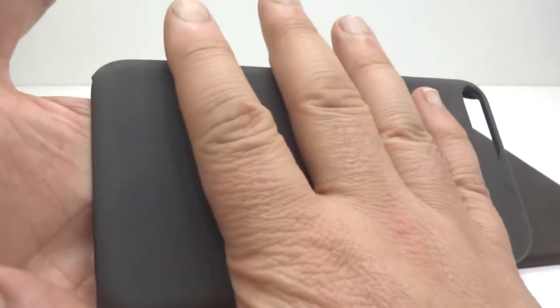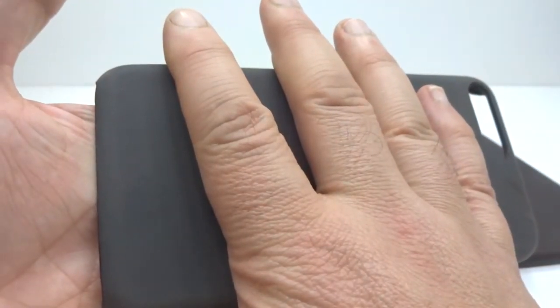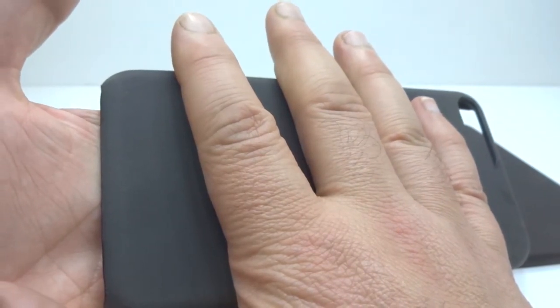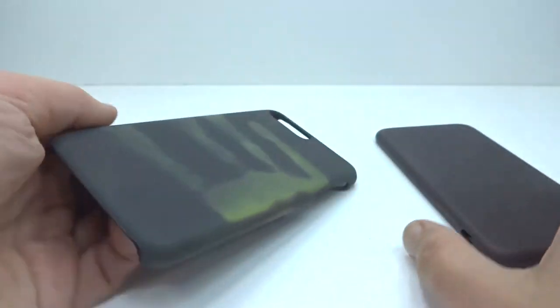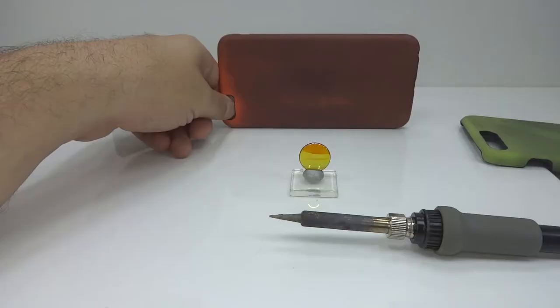I'm going to use this lens to focus some thermal radiation. I have here an iPhone case made of a material that changes colour from brown to green, or this other one orange, when warmed up above 33 degrees celsius. I'm putting the lens between the iPhone case and the soldering iron turned on to about 400 degrees celsius.